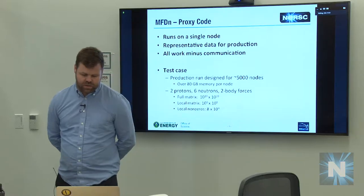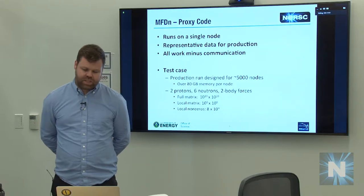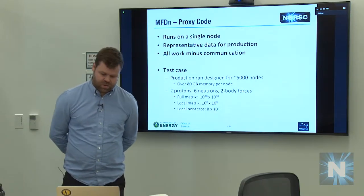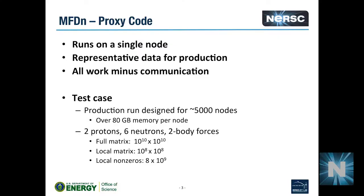For this code, the main science case is to run very large weak scaling problems. In that sense, it's quite natural to develop a proxy code that simulates the maximum sub-problem that we could fit onto a single node. That was our main use case for getting things like the vectorization right. We developed a full proxy code that does everything a single node would do in the real case, except for the communication — that part was just faked out.